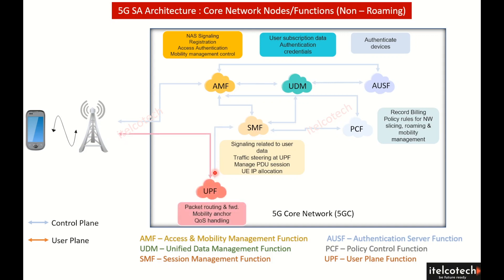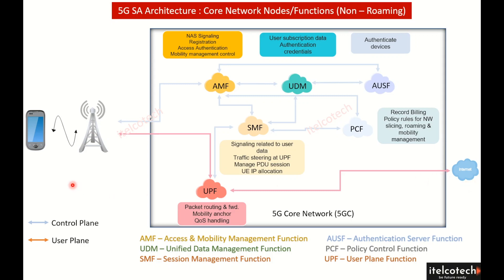Let's look at the user plane connectivity, which is handled by the UPF — the User Plane Function. Any user data transmitted between the device and the core network is handled by UPF. It takes care of how packets are routed and forwarded, how QoS is managed, and how the UPF connects to the external data network so information is passed to the UE appropriately. It also handles QoS in terms of network slicing.